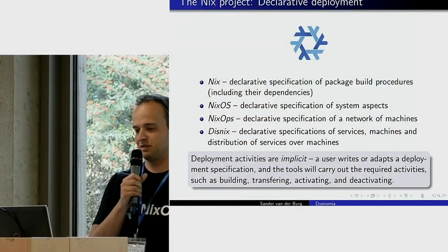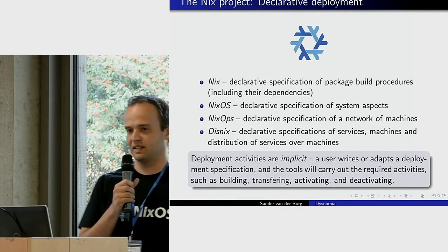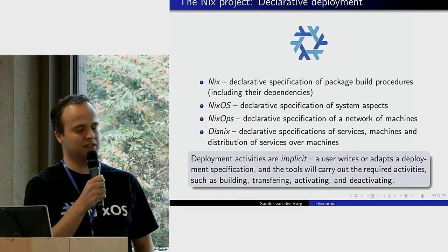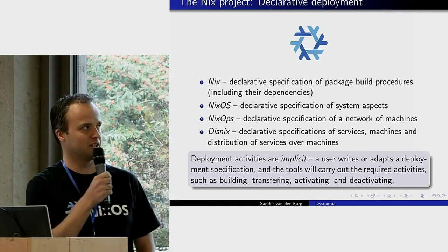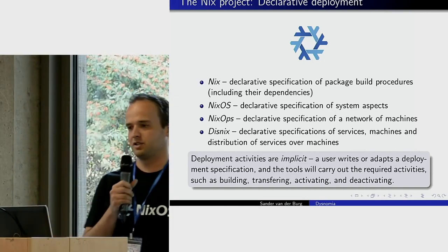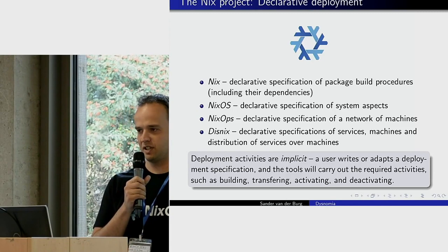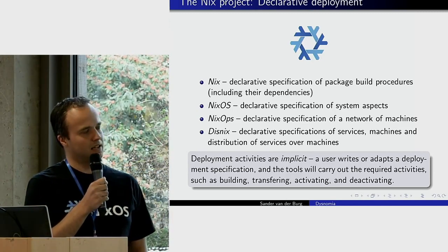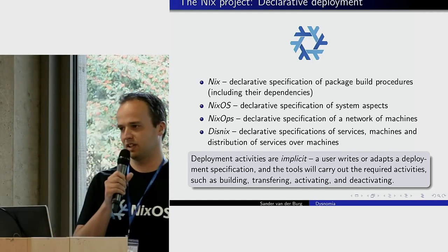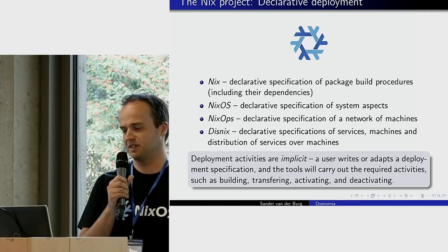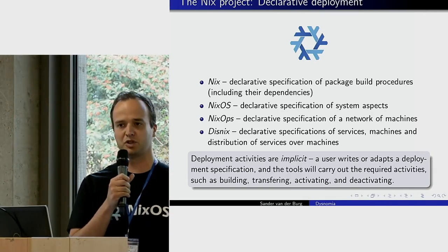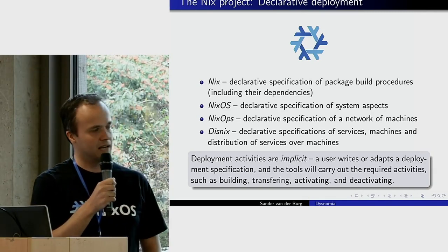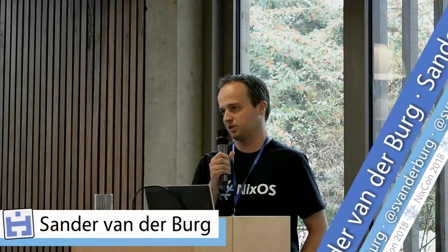First of all I'd like to stress that the Nix project is great. One of the properties I consider to be great is declarative deployment. All the tools in the Nix project basically support declarative deployment in some sense. With declarative deployment, you provide a declarative specification of the structure of your system, and the tool figures out what activities it needs to carry out to make that configuration work.